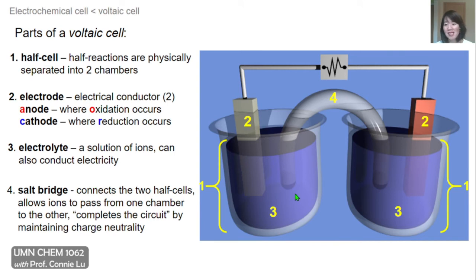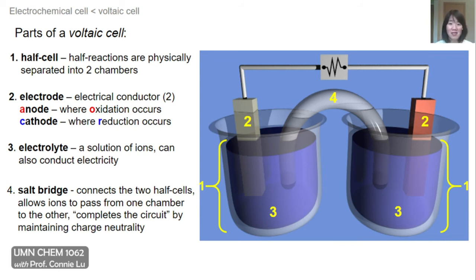The last key component is the glass arc called the salt bridge, which is packed with ions and allows ions to exchange. This arc connects the two half cells and completes the circuit. As spontaneous electron transfer occurs from one chamber to another, negative charge starts to build up in one chamber and positive charge in the other. To maintain charge neutrality in these half cells, charged ions can move from one chamber into another through the salt bridge.